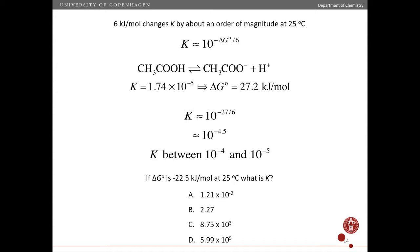So here's another value for delta G standard. So if delta G standard is minus 22.5 kilojoules per mole at 25 degrees Celsius what is the most likely value of the equilibrium constant here?